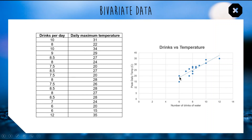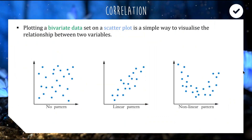We can have scatter plots that have no linear patterns — nothing really happening. We can have some sort of linear pattern like I had, or we can have a non-linear pattern, which means not a straight line.